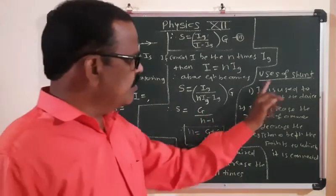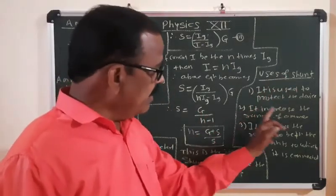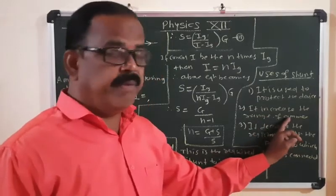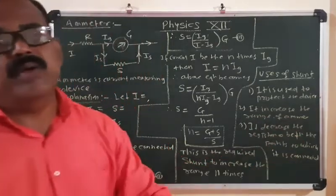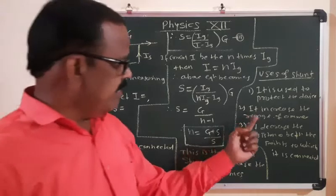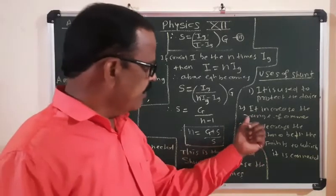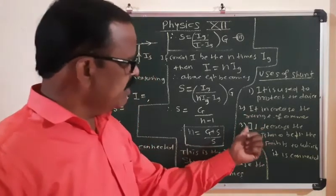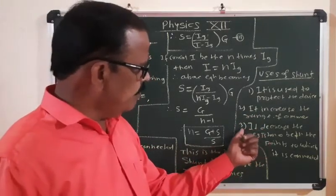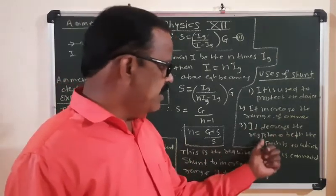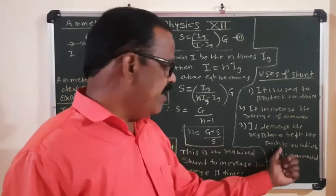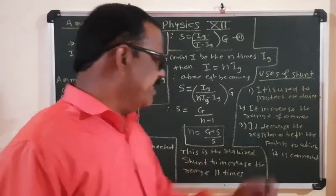The second use of the shunt is that it increases the range of the ammeter. The third use of the shunt is that it decreases the resistance between the points to which it is connected.